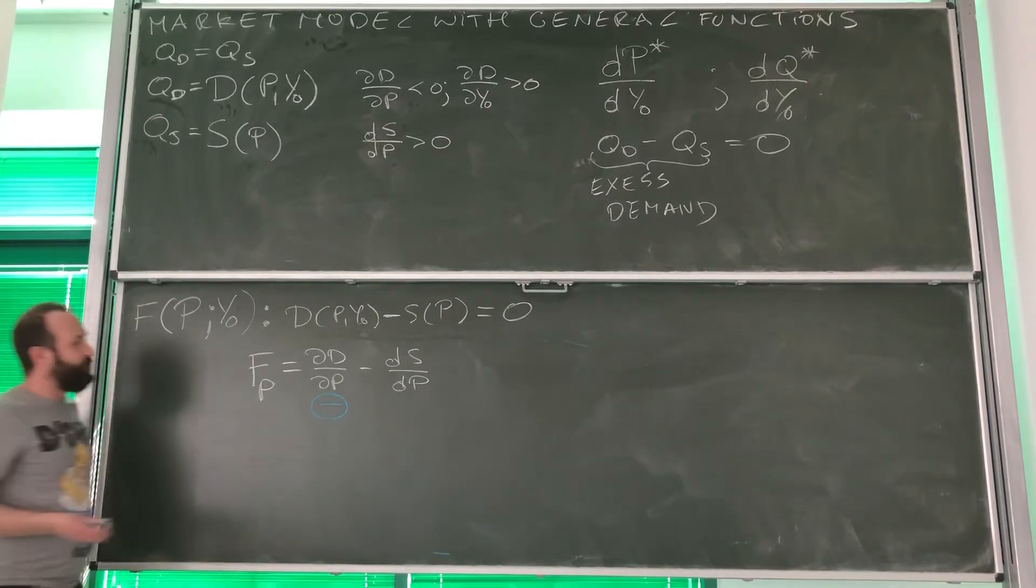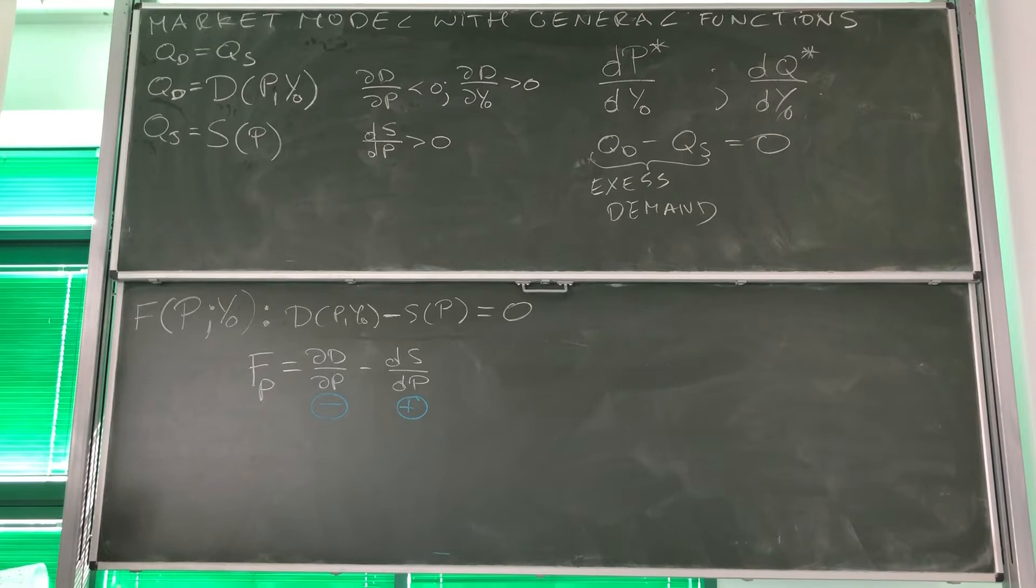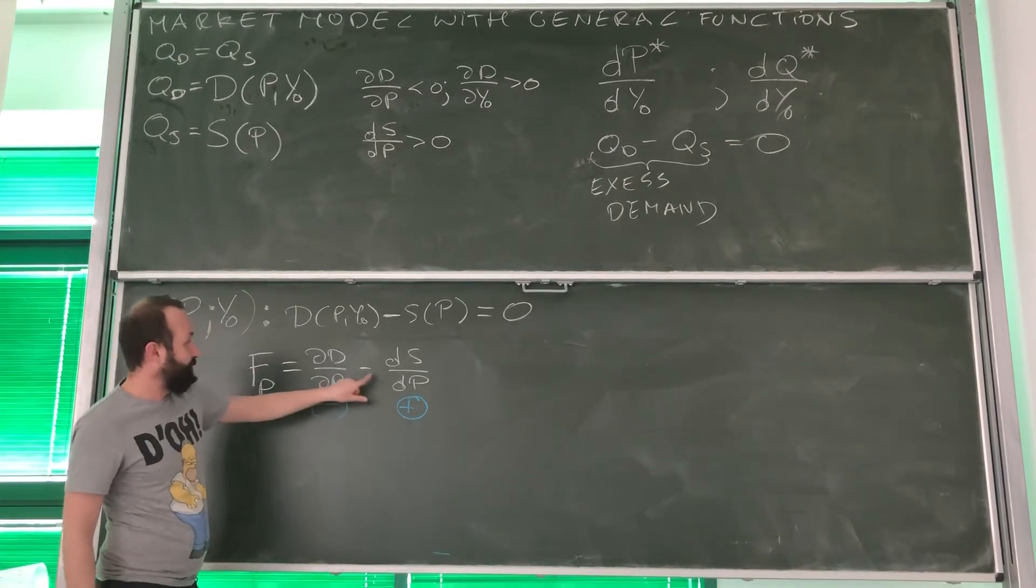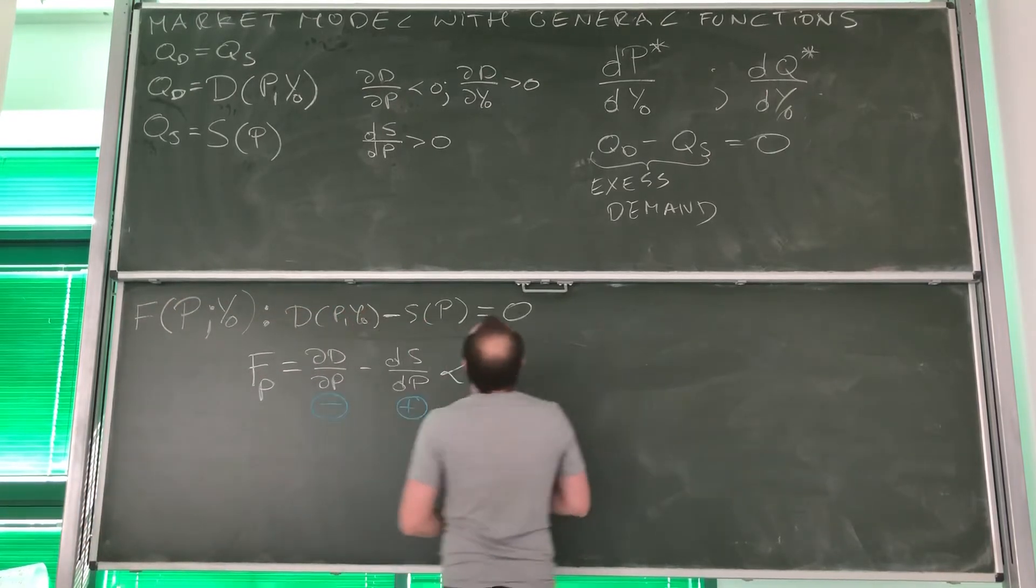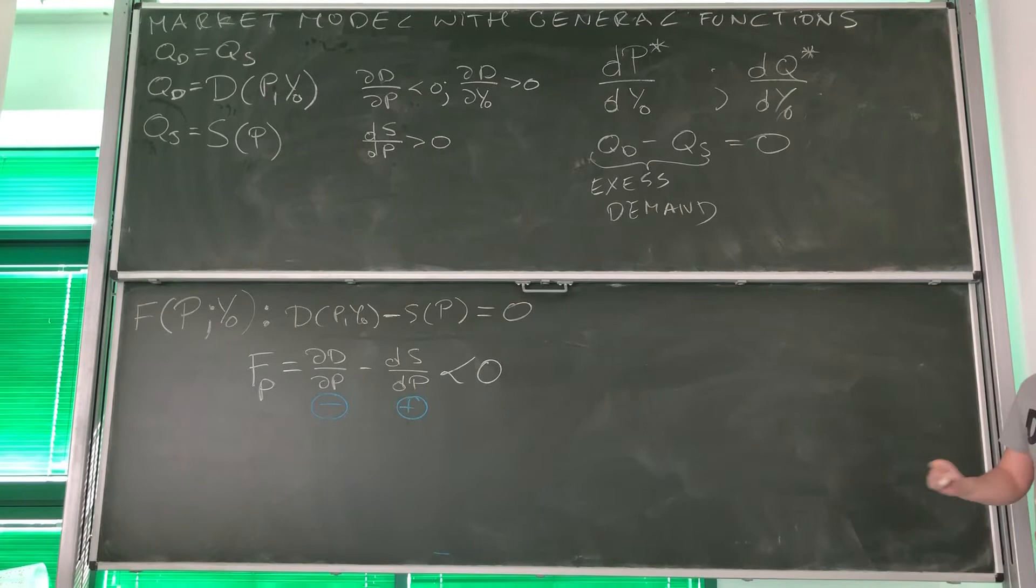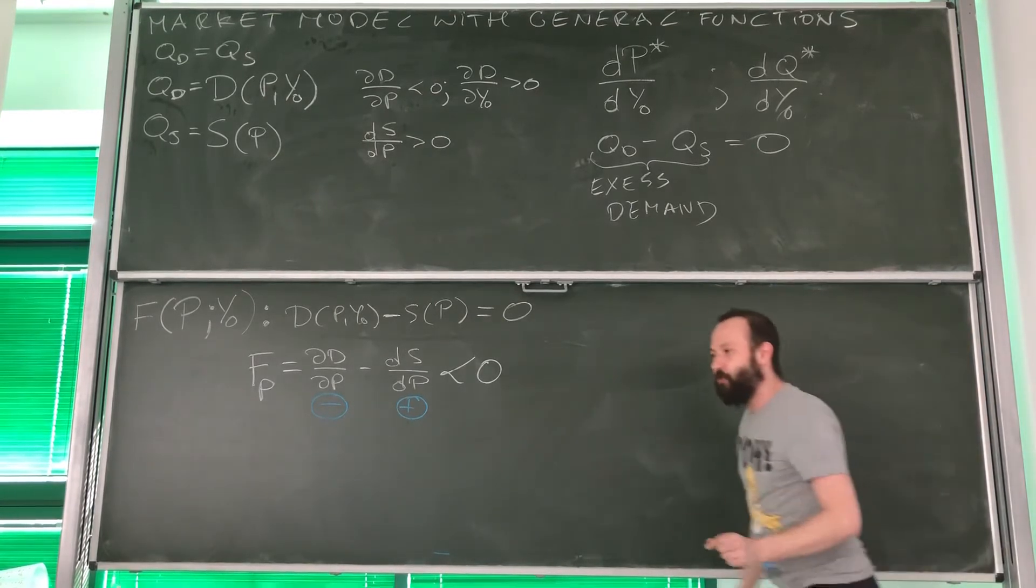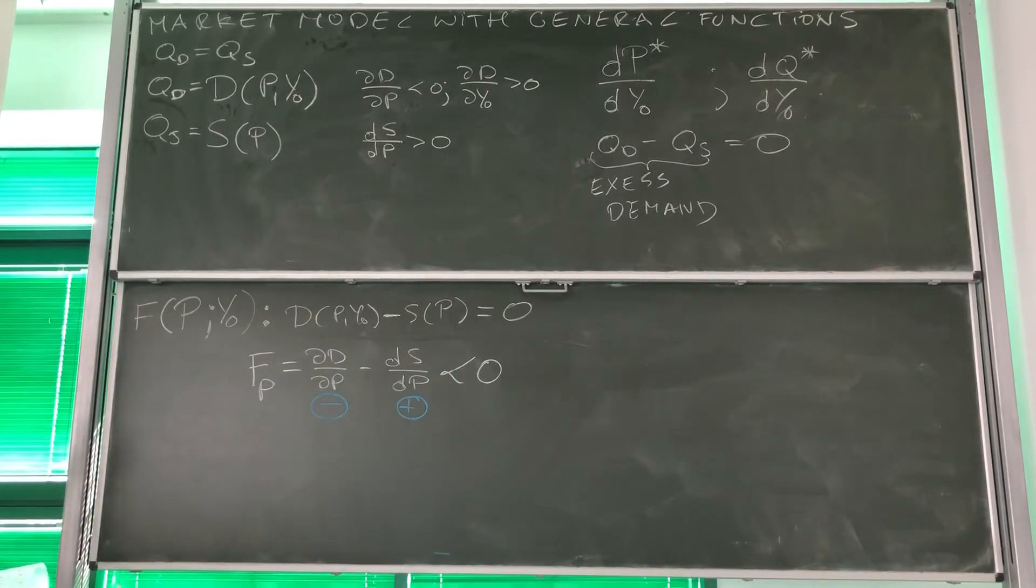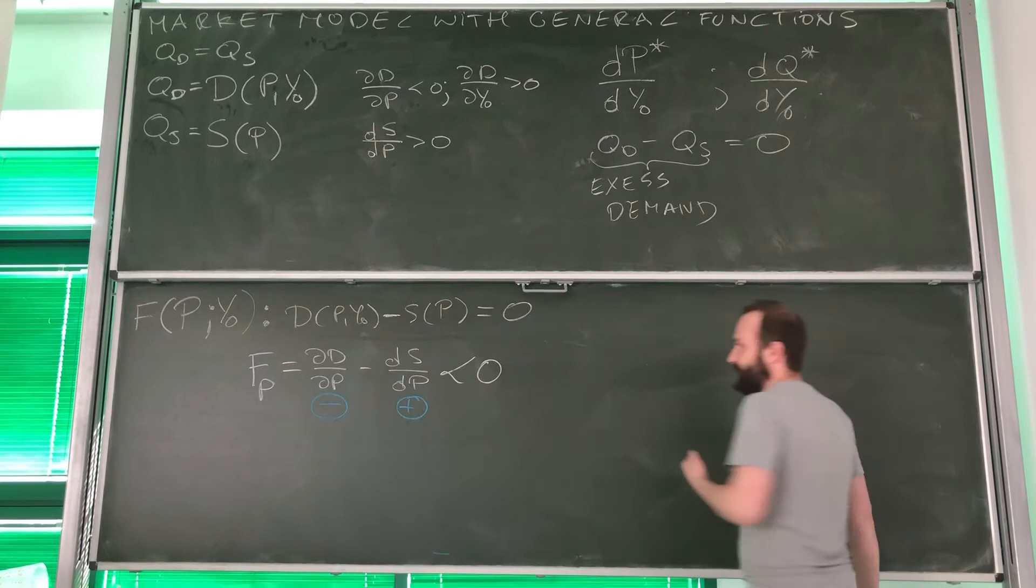However, in the case of supply, it is positive. The higher the price, the higher the quantity of supply. Now, we see that actually, because this is negative, this is positive, but with the minus up front, this is always negative. And when this is always negative, it means that this is different than zero. So our implicit function rule actually applies in this case.